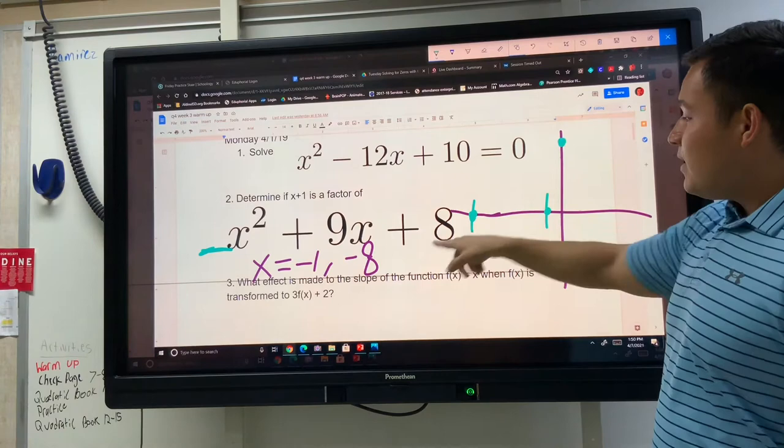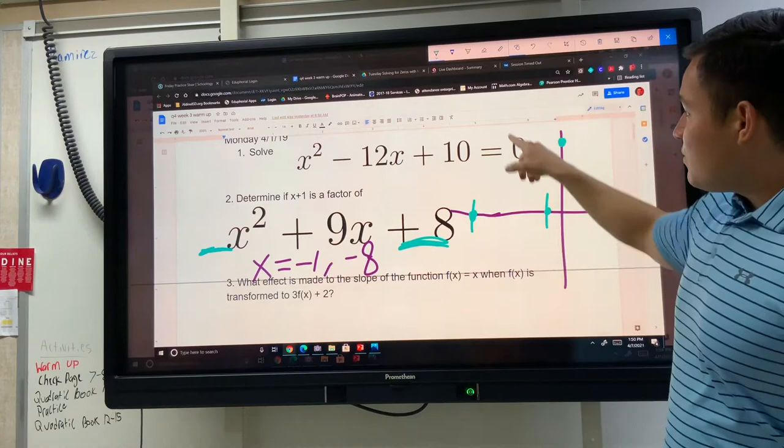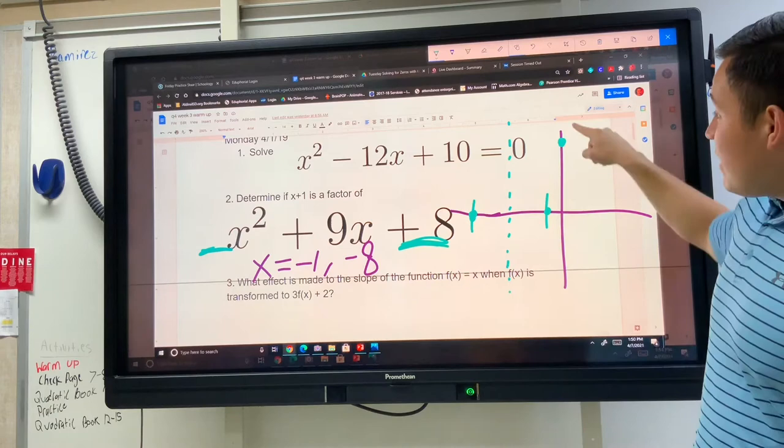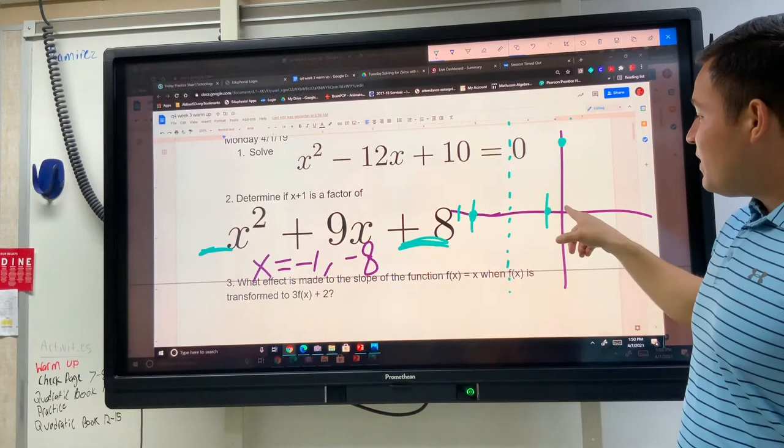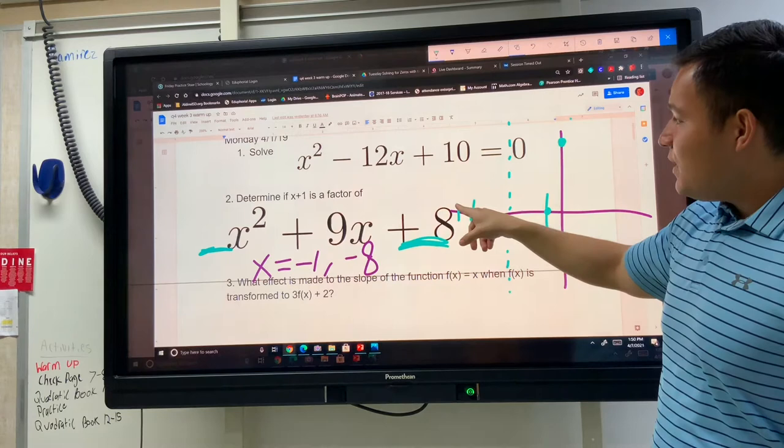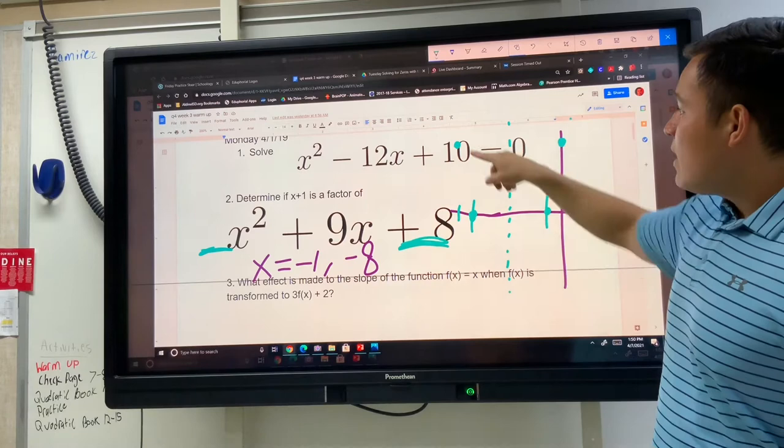Whatever is multiplying the x squared is going to tell you whether that parabola is opening upwards or downwards. Since we don't have anything multiplying, that means it's just going to be the normal factor of 1 that's multiplying, which means that this parabola is pretty much going to be the same shape as the parent function. It's just shifted to the left, and it's going to have a y-intercept of 8.